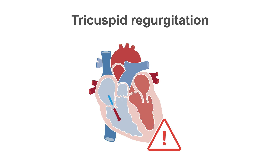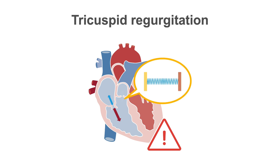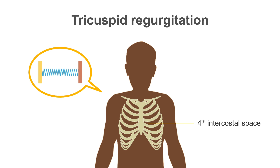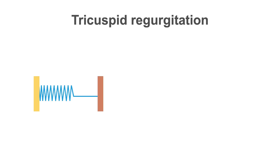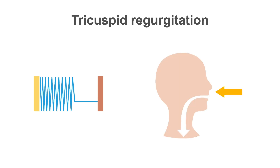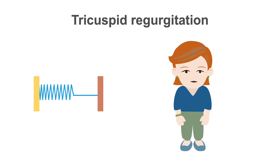If tricuspid valve dysfunction is present before or after infective endocarditis develops, the incompetent tricuspid valve will allow blood to pass retrograde into the right atrium during systole. The holosystolic murmur of tricuspid regurgitation is high-pitched and loudest in the fourth intercostal space parasternally or occasionally in the sub-xiphoid area. In acute tricuspid regurgitation, the murmur is usually of low intensity and limited to the first half of systole. It is usually increased during inspiration and decreased by standing and with the Valsalva maneuver.